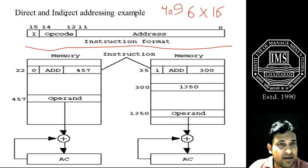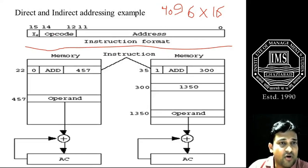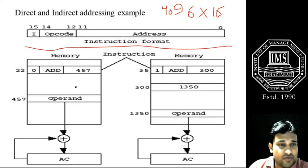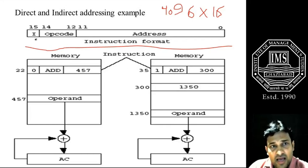With respect to direct and indirect addressing, the last bit is reserved for the I-bit. I is reserved for indicating whether we are in direct addressing or indirect addressing. If we are in direct addressing, I represents 0, and in indirect addressing, I has the value 1.